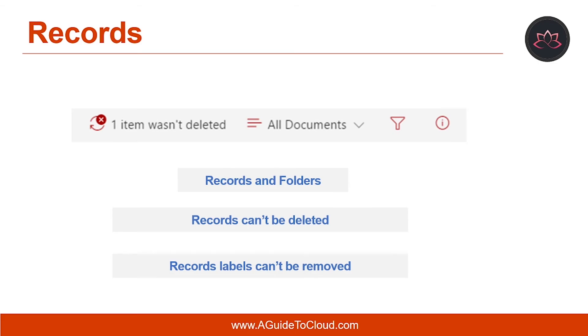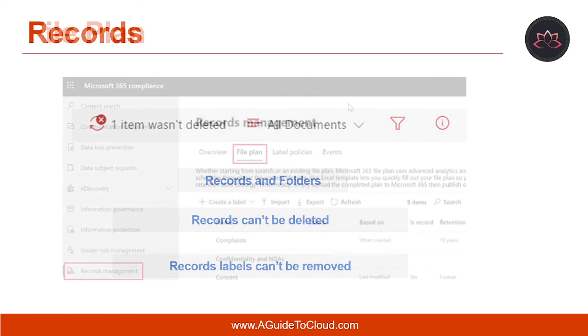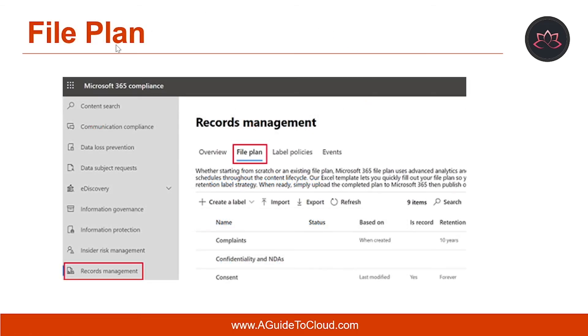The last type is that record labels can't be removed. After a record label has been applied to an item, only the admin of that location can remove the record label.